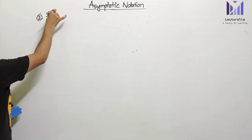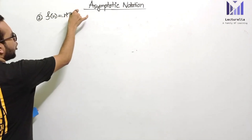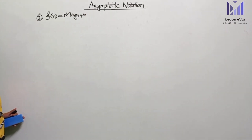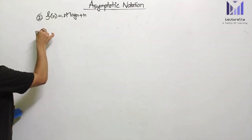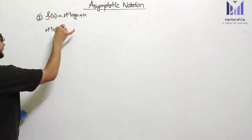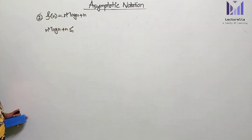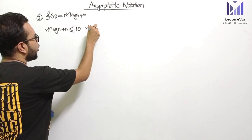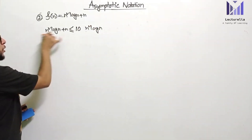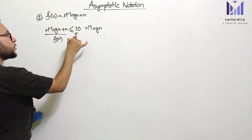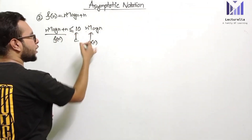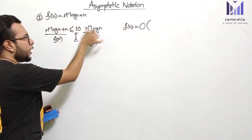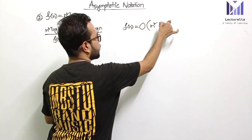Second example: the function f(n) = n² log n + n. For Big O notation, n² log n + n is less than or equal to — for example — 10n² log n. So f(n) ≤ c into g(n), and therefore g(n) equals n² log n.